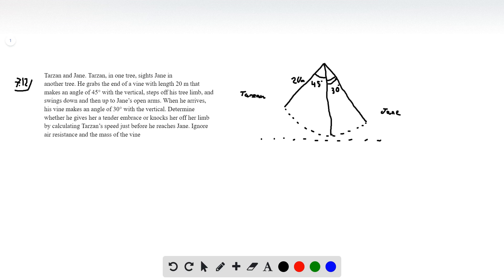So he swings down, doesn't hit the bottom but gracefully grazes his toes along the bottom, then hits Jane when he comes back up. We're supposed to determine whether he gives her a tender embrace or knocks her off the limb by calculating Tarzan's speed. So if his speed is slow, he'll land there slowly to give her a tender embrace, or if he's going pretty quickly, he'll knock her off the limb.